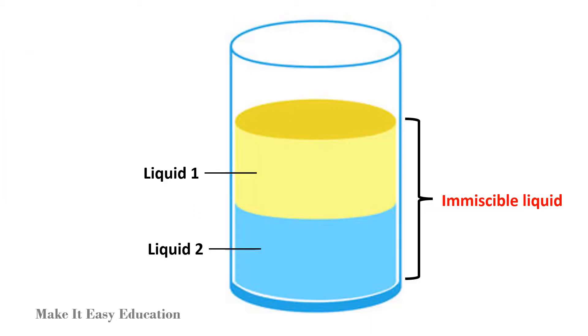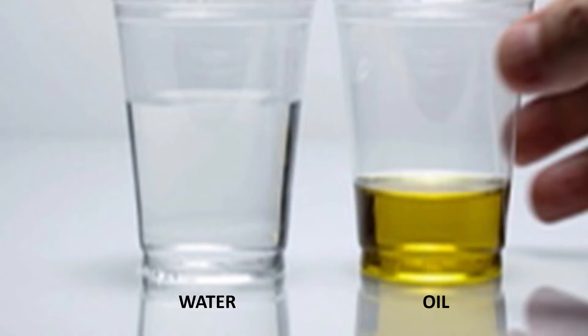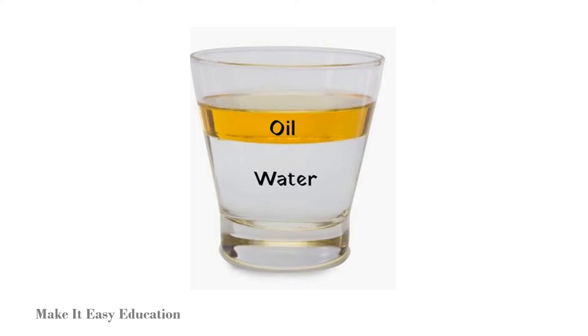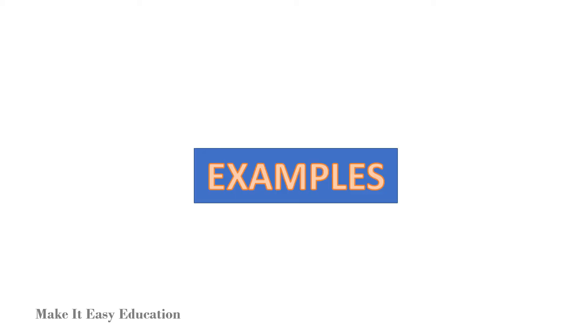When two immiscible liquids are mixed, the lighter liquid floats on top of the heavier liquid. Water and oil are immiscible liquids. Oil is lighter than water, so it floats on the surface of water.